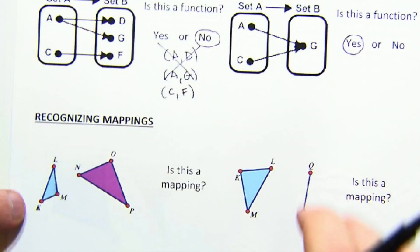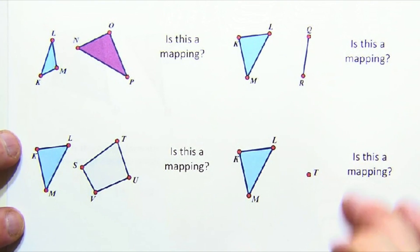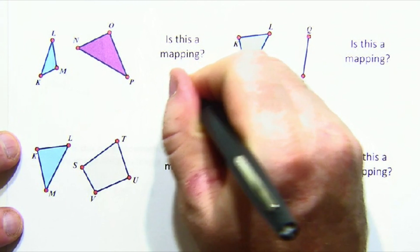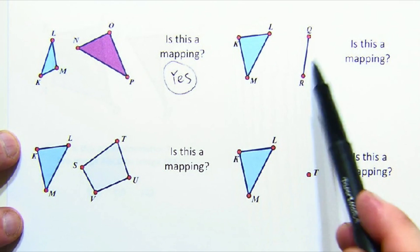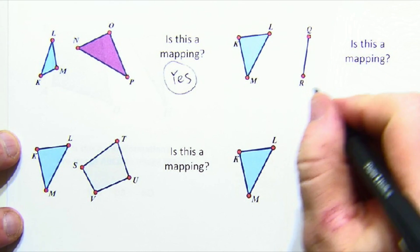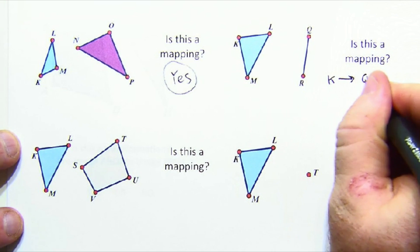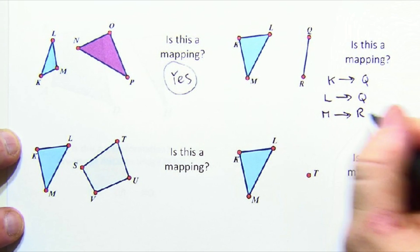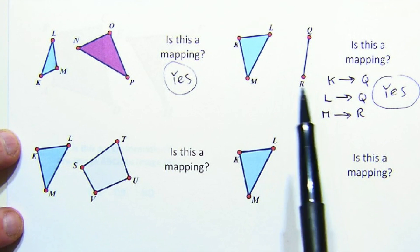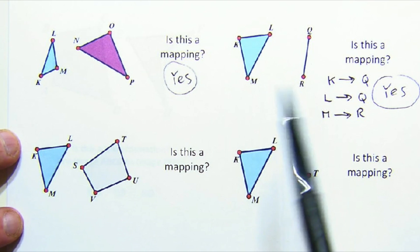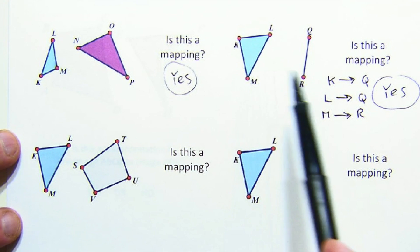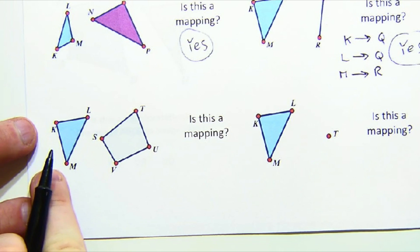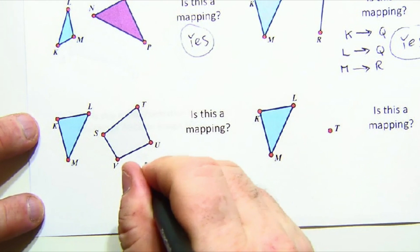And then finally, this last one, A gets assigned G, C gets assigned G. That is also a function. Now remember, a mapping is a type of a function, so mapping will do the same kind of things and it's kind of awkward. Is this a mapping, three items going to three items? Yes it is. Two, three items going to two items? Sure, that is still a mapping, a weird one. For instance, K maybe went to Q, L maybe went to Q, and M went to R maybe. And so that's a yes answer.